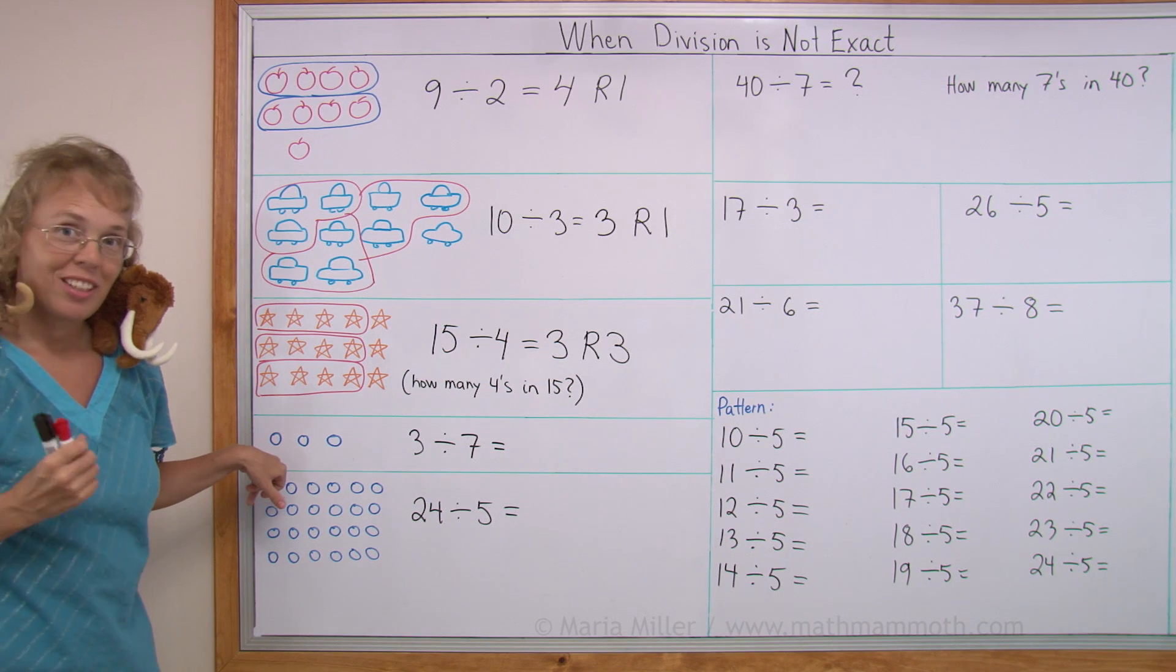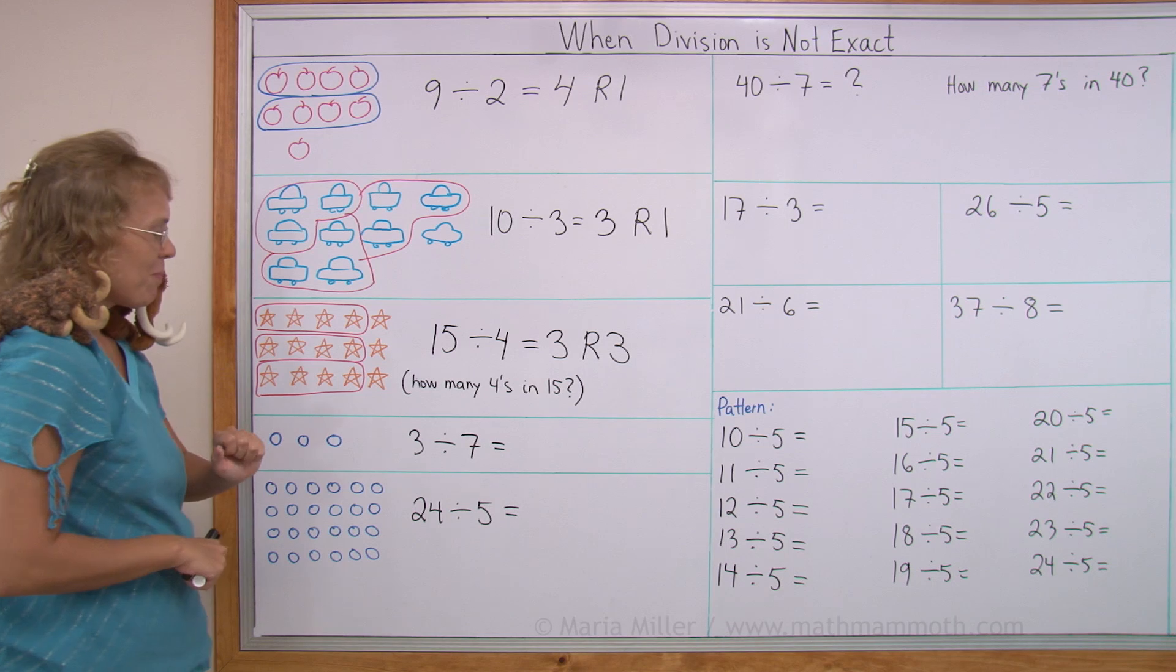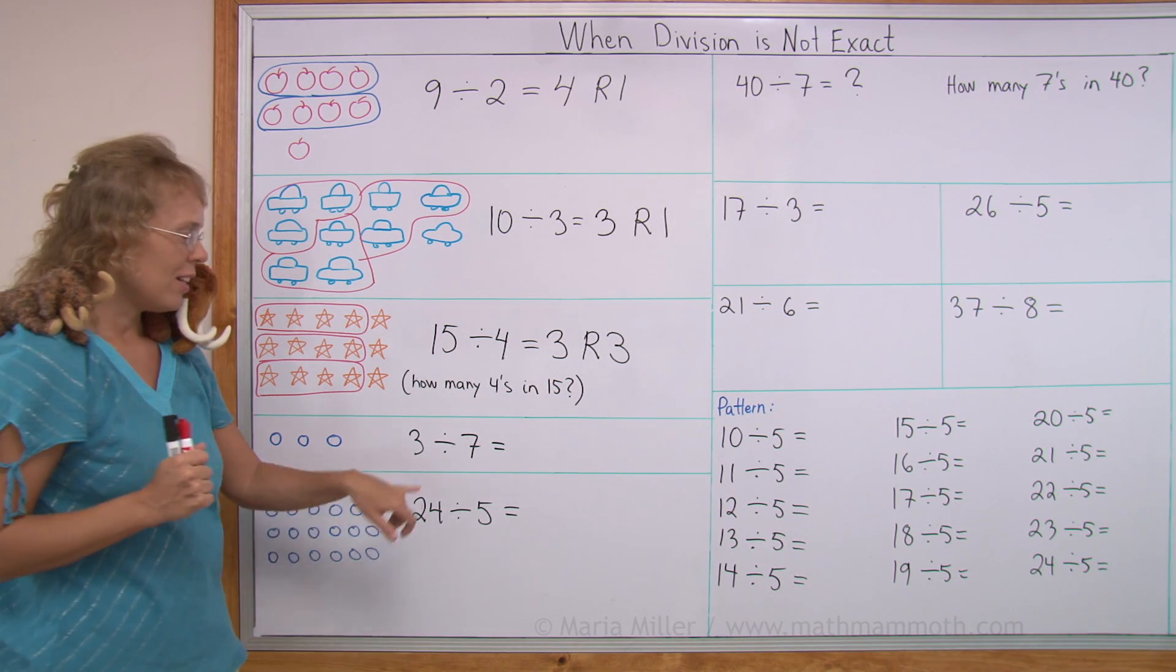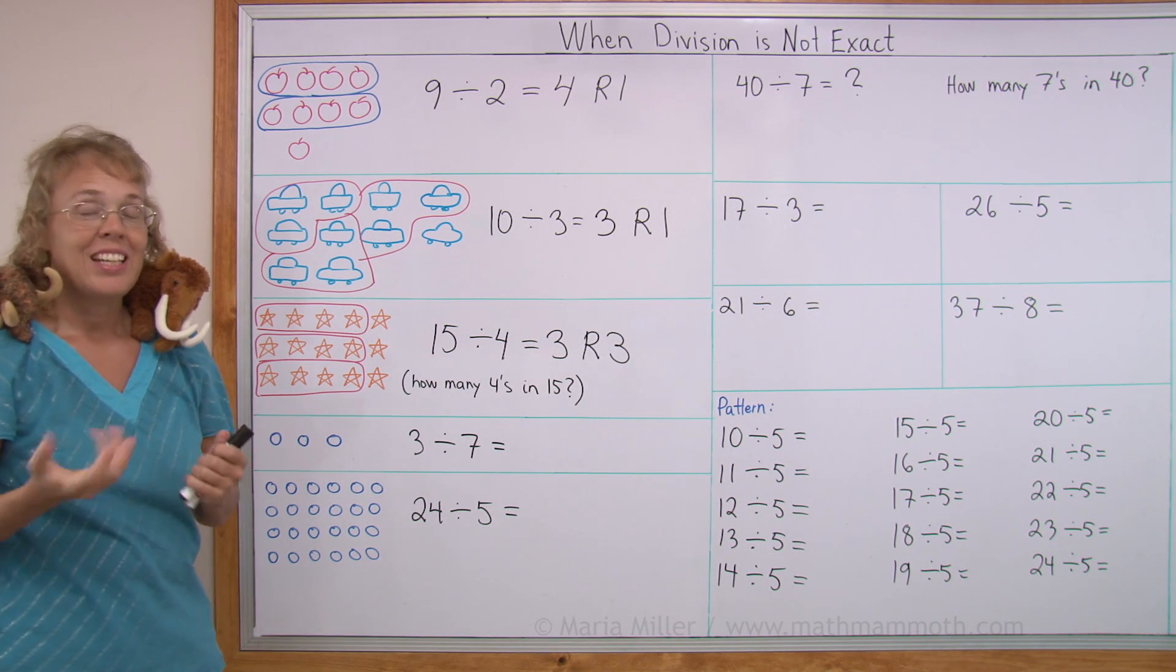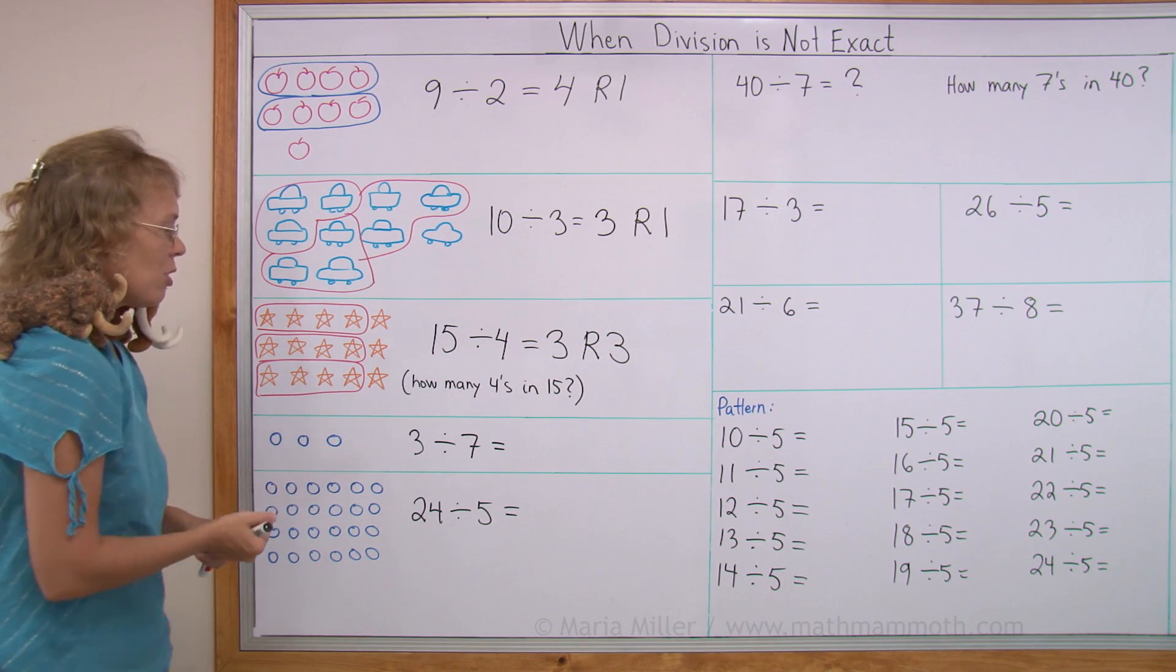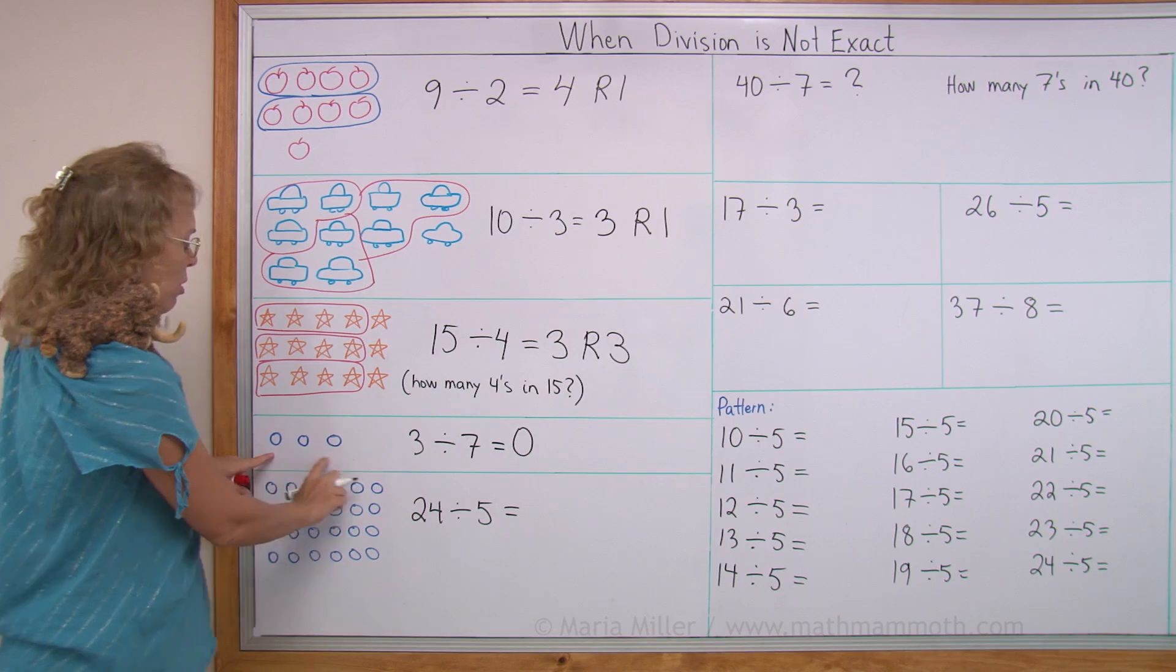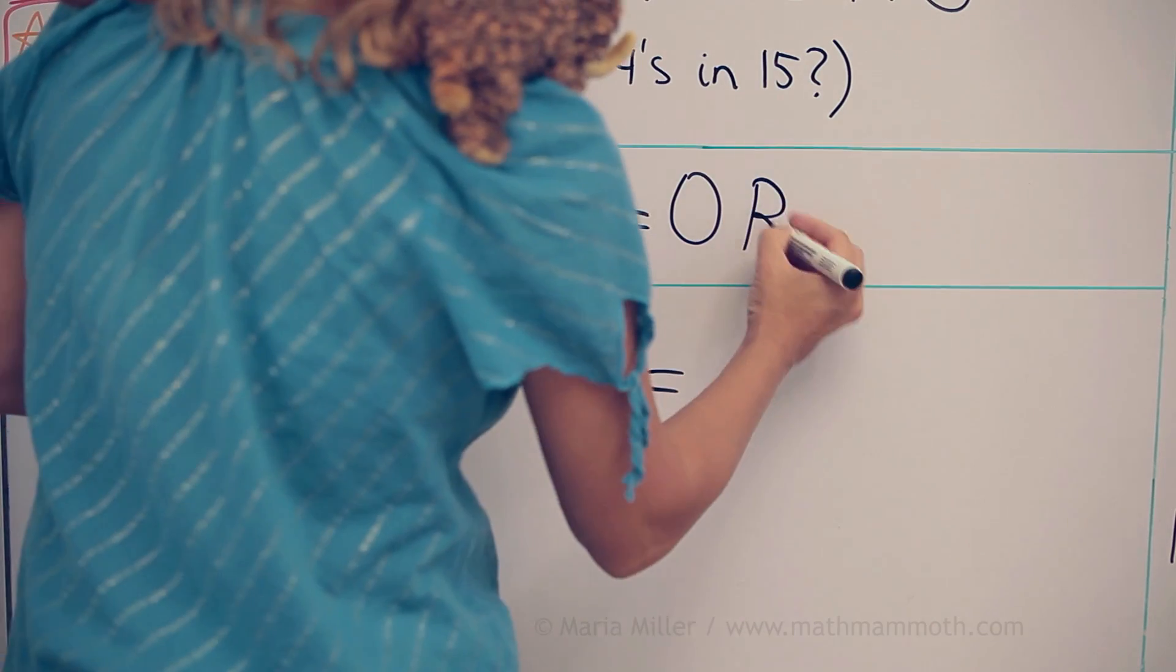Next, we come to a very interesting situation. Let's say we have three marbles and let's say we have seven people sharing them. Three divided by seven. Then what? Then we cannot share evenly at all. Nobody gets any marbles, right? Because there's not enough to go around. So the answer would be zero and then all three are left as leftovers or remainder. Remainder three.